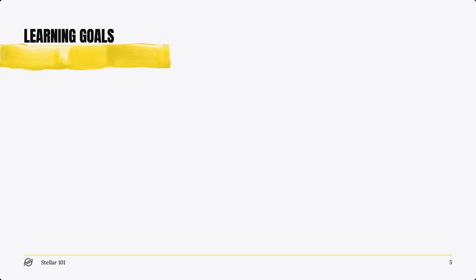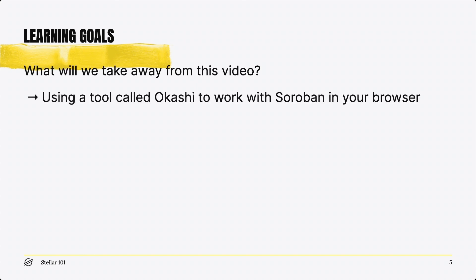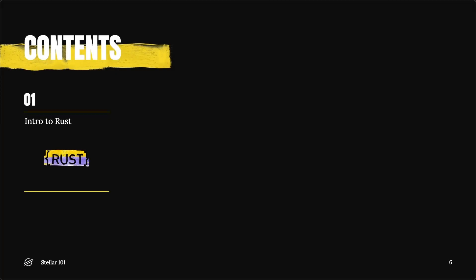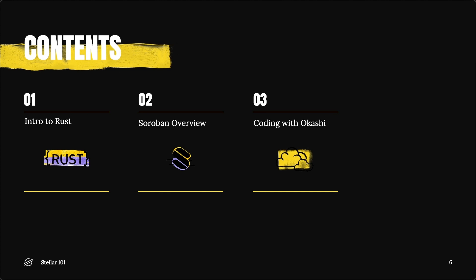By the end of this video, you'll be able to use Okashi to work with Soroban in a browser and leverage the Stellar CLI to work with Soroban on the command line. First, we'll go through a quick intro on Rust. Then we'll walk through the Soroban smart contract platform. After that, we're going to jump into some live coding with Okashi. Finally, we'll demonstrate the Stellar command line interface in action. Sound good? Okay, let's dive in.